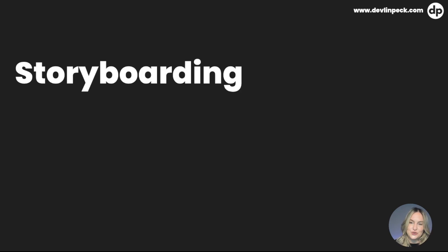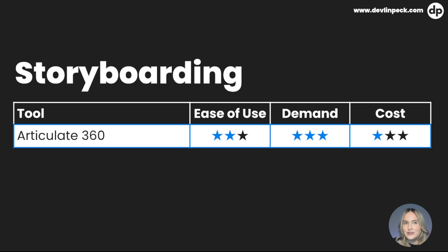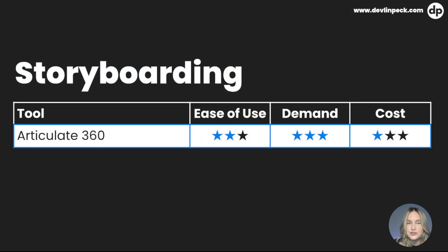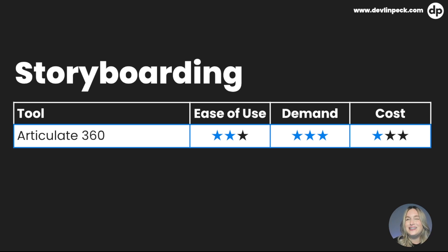Let's get into the second category, which is storyboarding. The first tool might come as a little bit of a shock because we just talked about it — some teams that work in an agile environment storyboard in Articulate 360. It's not super common, but you can use the 360 review feature with both Storyline and Rise. You can put what would normally be in a storyboard in your notes on screen, and your subject matter experts or whoever is reviewing it can look at it and give feedback. However, it's not as effective as something like Word where you can actually leave comments and get feedback in real time.